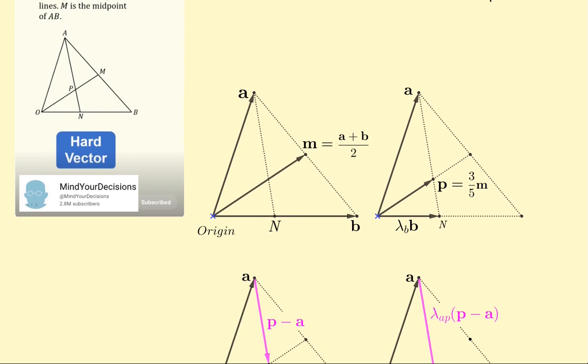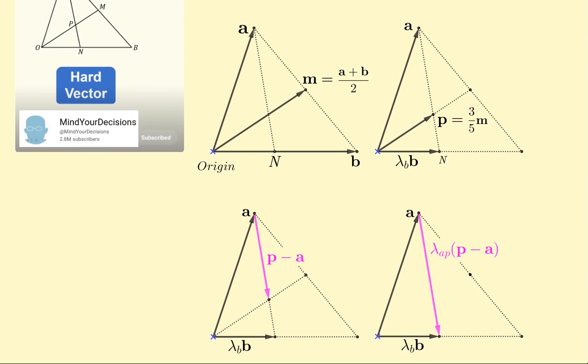Our next step here is to come up with a vector triangle problem where we're going to express this side as a scalar multiple of the vector B and this side here as a scalar multiple of the vector P minus A.